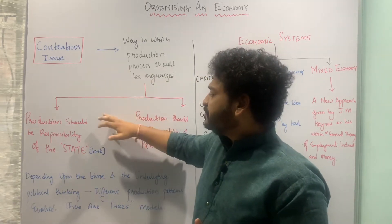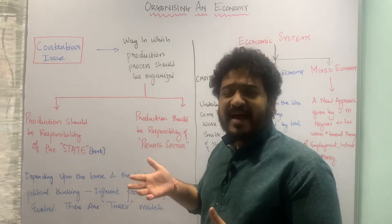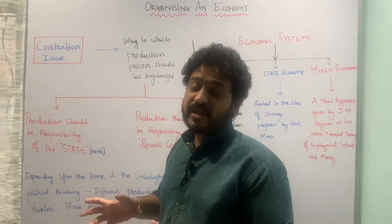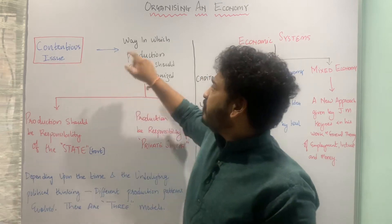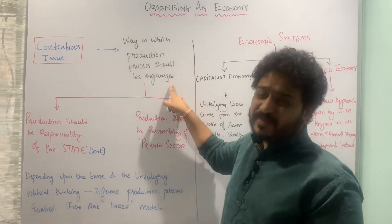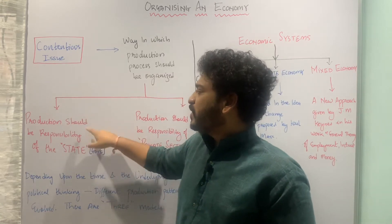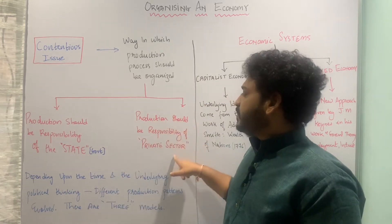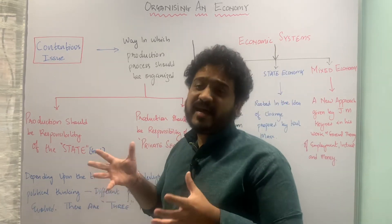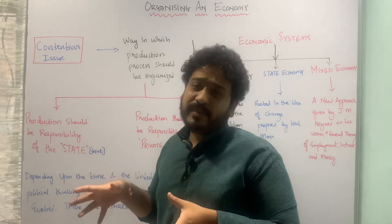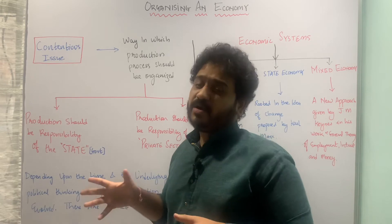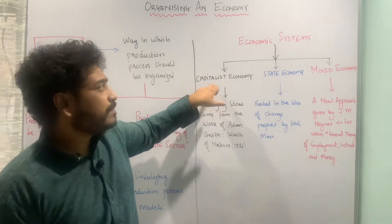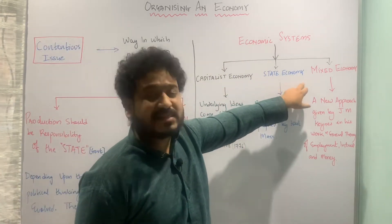As a result of this, with respect to time and the underlying socio-political context, different sorts of economic systems evolved. Depending upon the underlying political context as well as the given timeframe, three different economic systems emerged: the capitalist economic system, the state economy system, and the mixed economy system.